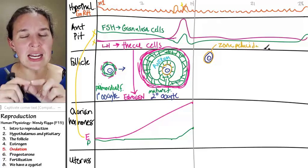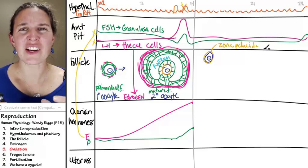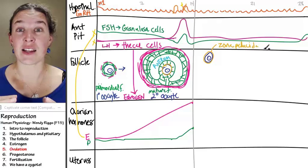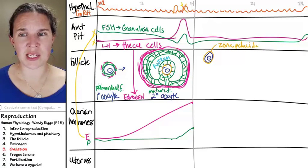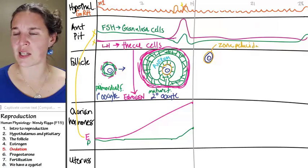The zona pellucida is kind of this thick, clear glycoprotein covering. And it's sort of protective. It's going to keep the spermies out, really, but except for one lucky guy.